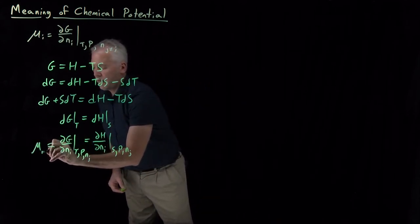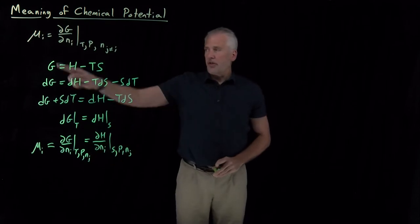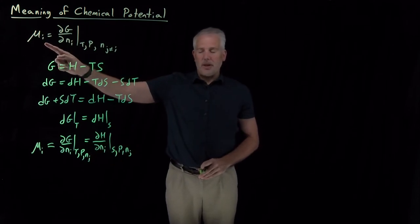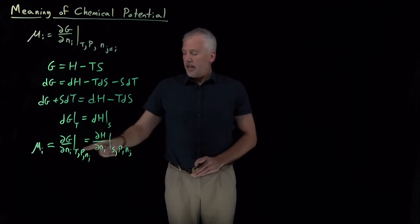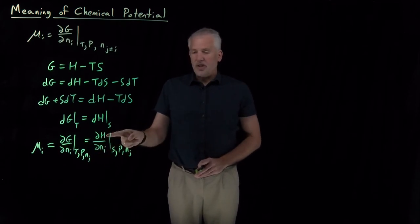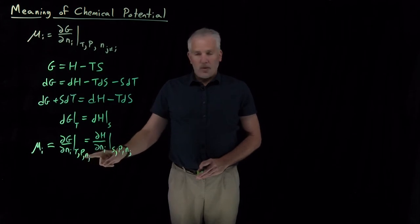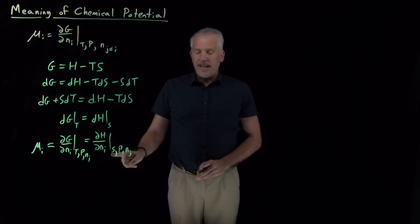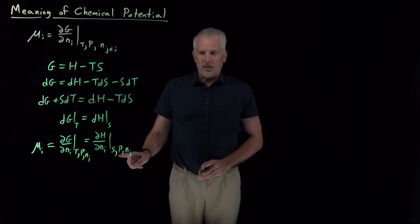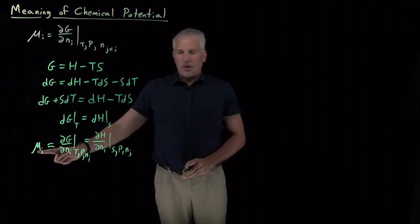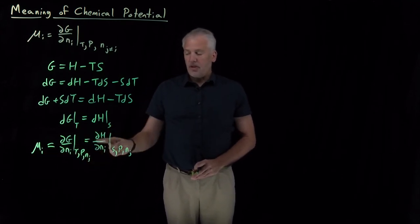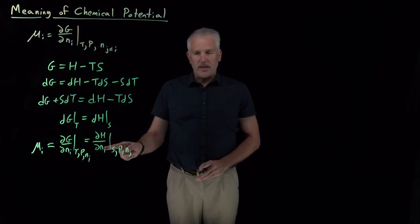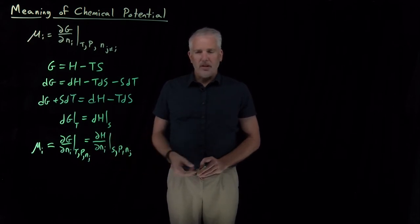I've now manipulated the left side until it looks exactly like our definition of the chemical potential. Chemical potential is the partial molar free energy. That happens to be the same thing as the change in the enthalpy as I change the number of moles — not while holding T and P constant, but while holding the entropy and the pressure constant.